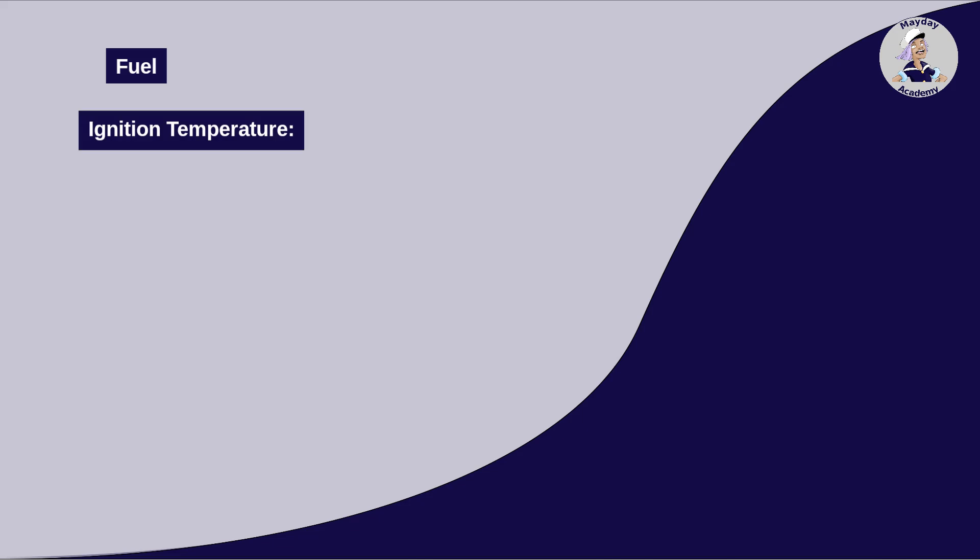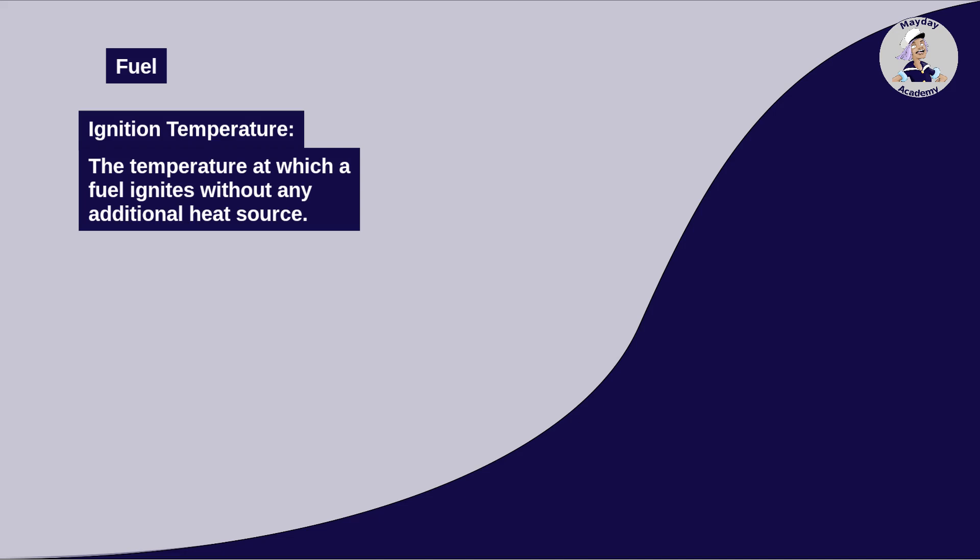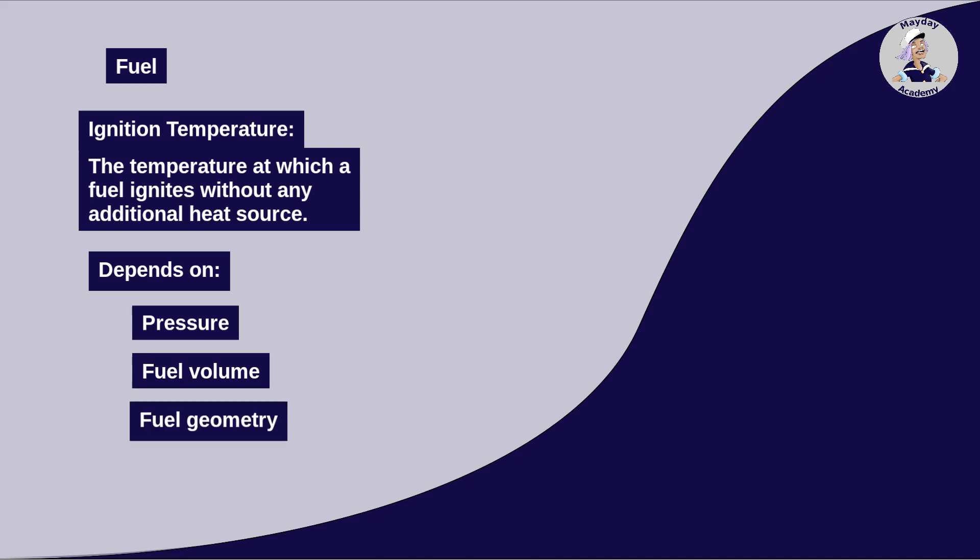The ignition point or ignition temperature is the temperature at which a flammable substance (solid, liquid, its vapors, or gas) must be heated so that it self-ignites in the presence of oxygen solely due to its temperature, without an additional ignition source like a spark. It varies for each substance and is dependent on several factors like pressure, fuel volume, and fuel geometry.